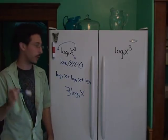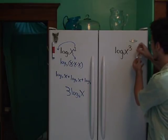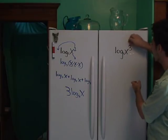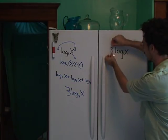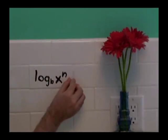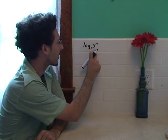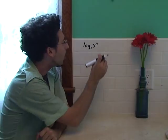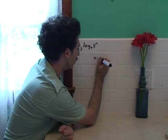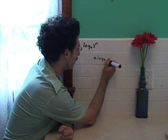Or, the more fun way, we have taken the 3 and we have moved it around to the front. So, any log base b x to the n, we can always move the n around to the front, giving us n log b x.